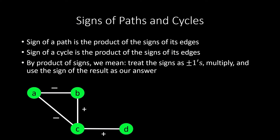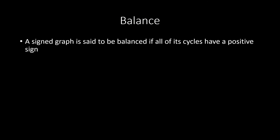As an exercise, can you find the paths — including paths of a single edge — that have a positive sign in this graph? Here they are. Building off this idea, we have the concept of balance. A signed graph is said to be balanced if all its cycles have positive sign.